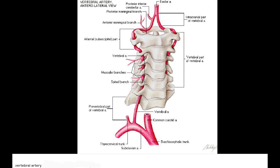Then is the vertebral part. The vertebral part is within the foramen transversarium of the upper 6 cervical vertebrae. This is the second part, also known as the vertebral part.